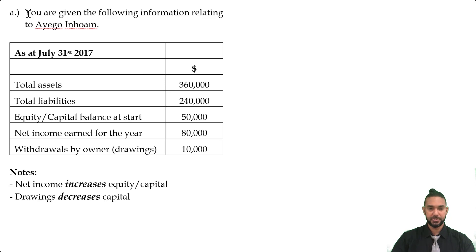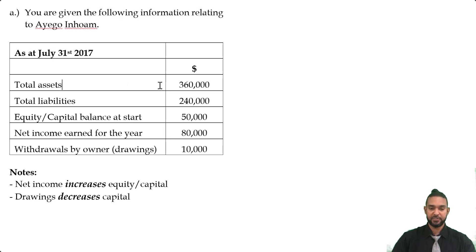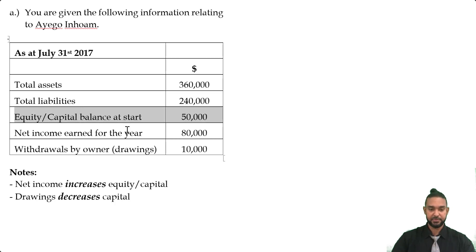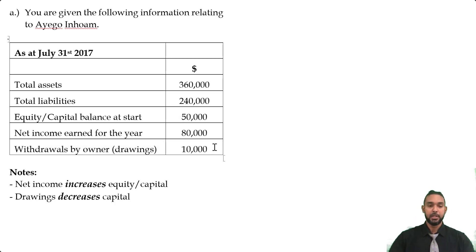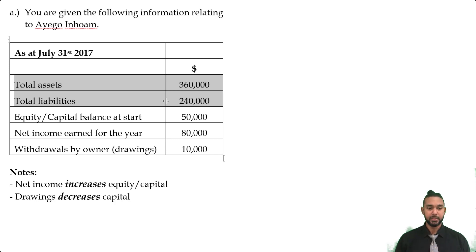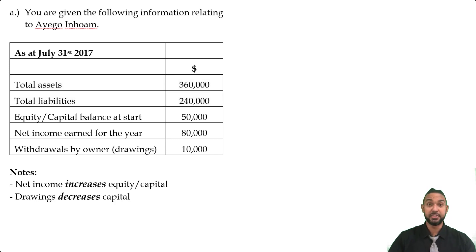For our first example, we are given the following information relating to IA going home as at July 31st 2017. We have total assets, total liabilities, and equity or capital balance at start. Equity is a synonym for capital — it's not something usually seen at CSEC but used at different levels, and it's a good word to know. The capital balance at start is 50,000, net income earned for the year is 80,000, and withdrawals by the owner — normally known as drawings — is 10,000. I've included total assets and total liabilities to give a relatively complete balance sheet in a compact form. I'm going to do this in the net assets presentation where you have assets minus liabilities on top and the capital section below.